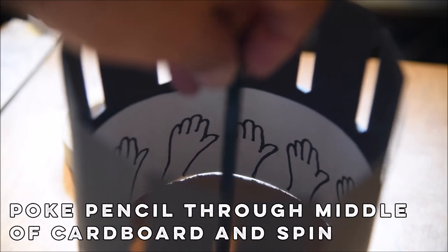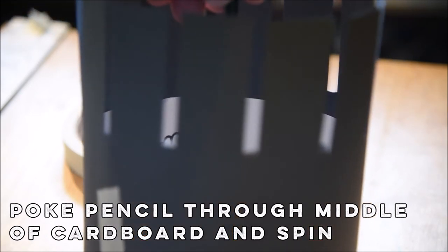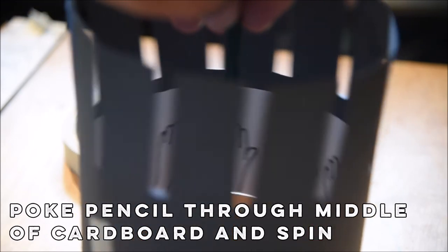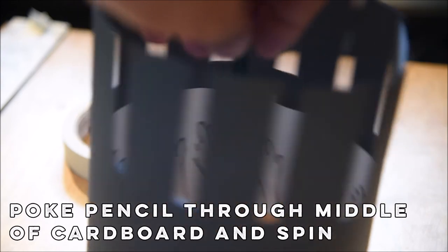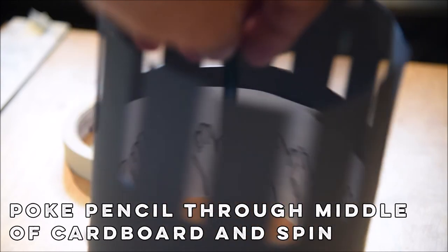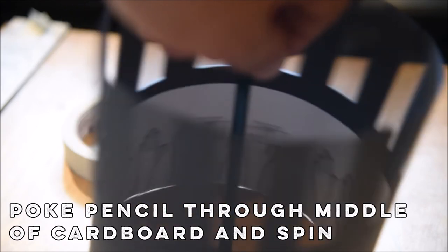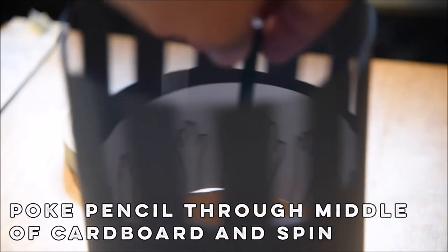And so what we want to do here is look straight across through the slits at the drawings on the other side. And I'm gonna spin this real gently. And hopefully, a little difficult, but hopefully we can see the sort of animation going on a little bit. Do you get that illusion of the hands waving back and forth a little?